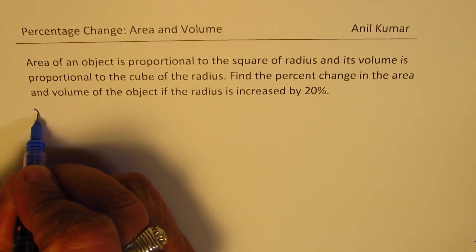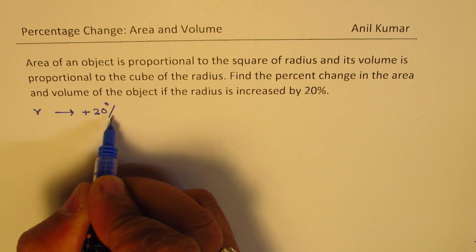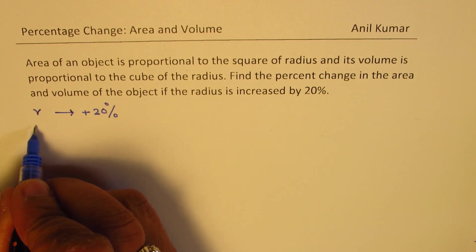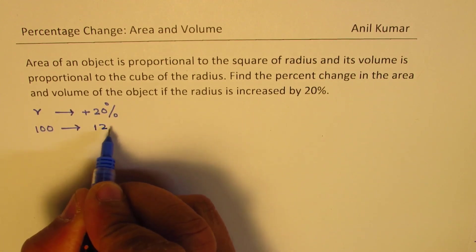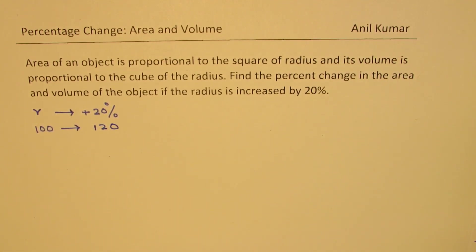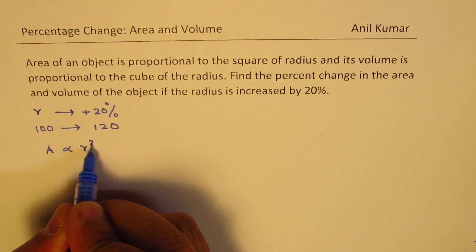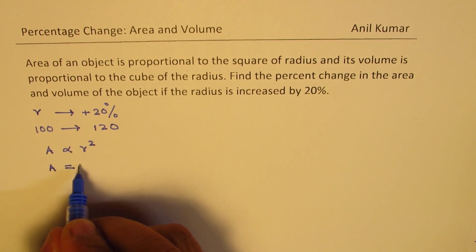So let's first understand the concept. We have radius R and it is increased by let me say plus 20%. Now whenever we have percent examples it is good to always assume value as 100. So if it is 100 if I am saying increased by 20% it becomes 120. So that is percent of 20% increase in the radius. Now what we are saying here is that area is proportional to radius square. When we say proportional to that means it is constant, then it is equal to some constant let's say K times R square.